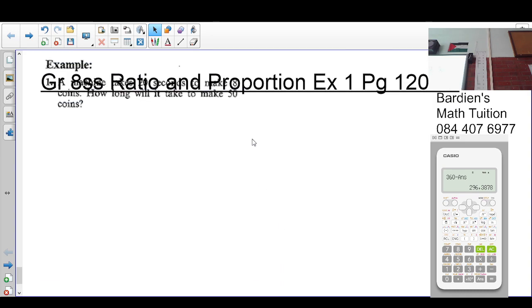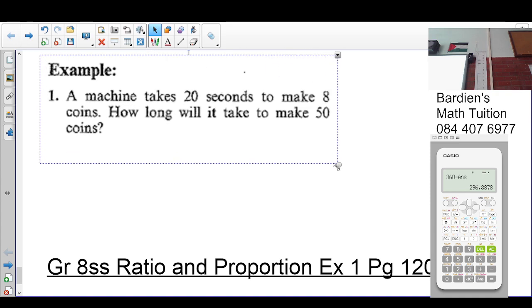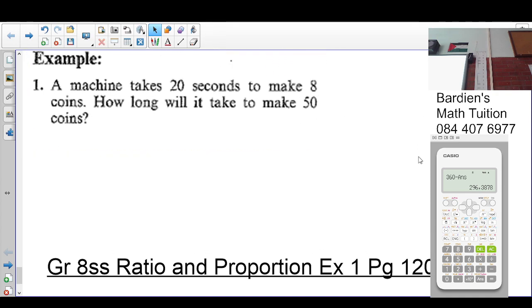Let's do the last one quickly. We're told that the machine takes 20 seconds to make 8 coins. How long will it take to make 50 coins? A machine takes 20 seconds to make 8 coins, so we must work out how long does it take the machine to make 1 coin. Can you see that people?